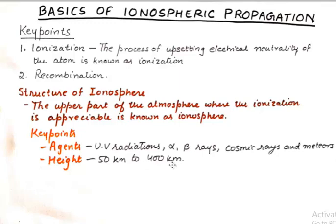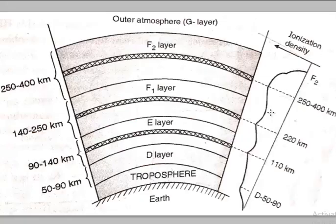We have the troposphere and then the stratosphere up to a level of 50 to 90 kilometers, and after that the ionosphere comes into play. The ionosphere extends to 400 kilometers above the surface of the earth — so that is humongous. This is how the ionosphere looks.